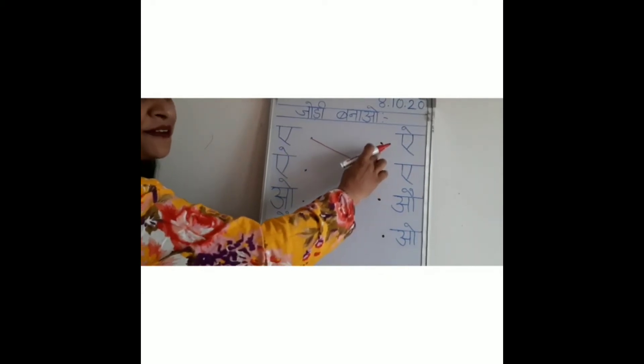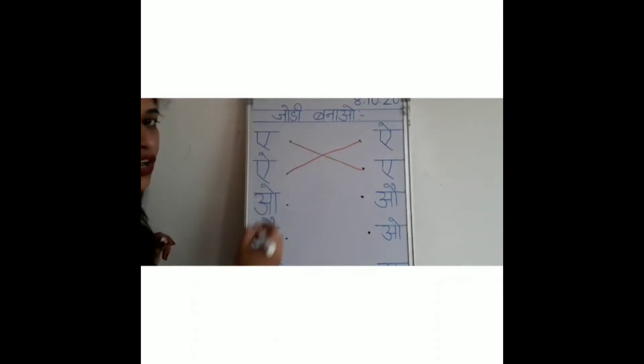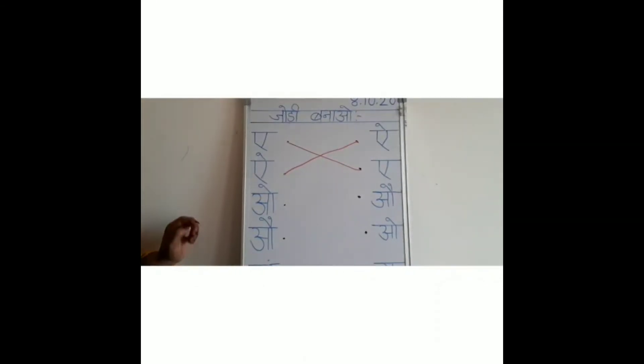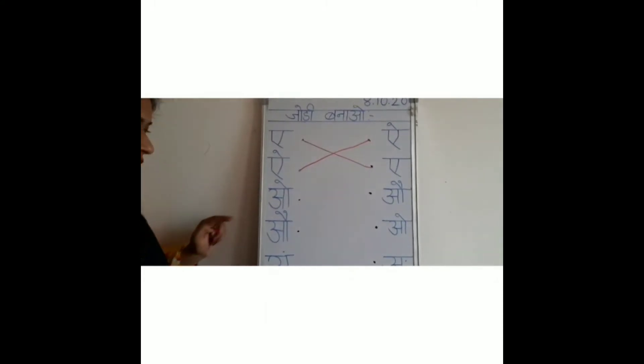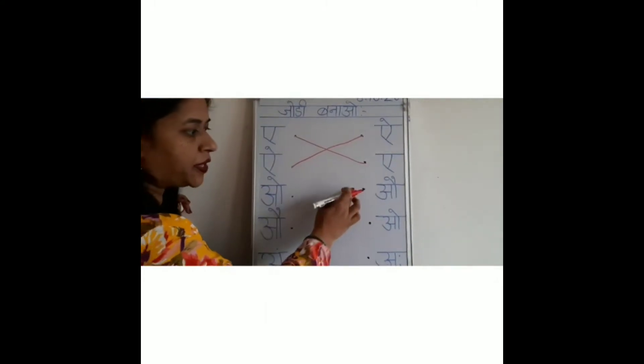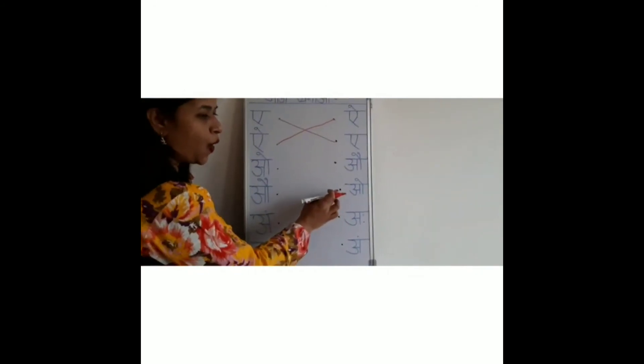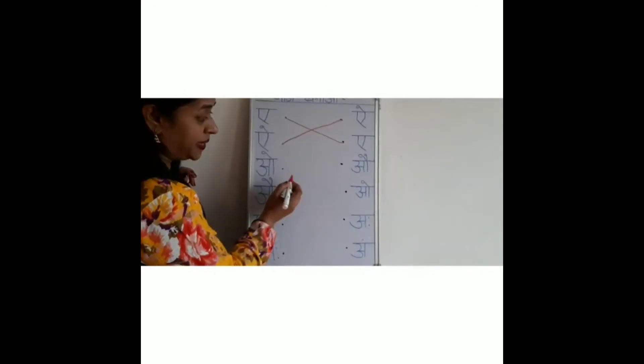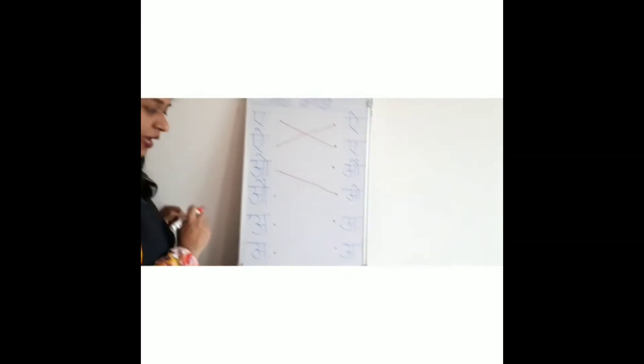So A.80 ka, we will join from A.80. Okay, now A.80 ka is here, in this line where is it? At the top, in the first number. So what will we do? We will join A.80 to A.80 ka, okay? Now what is this? O.o.klika, very good.